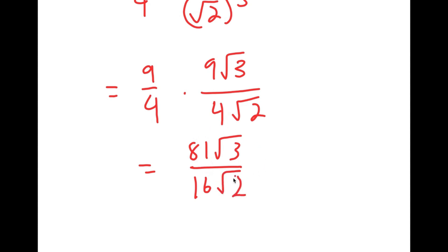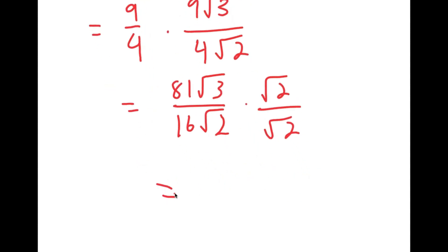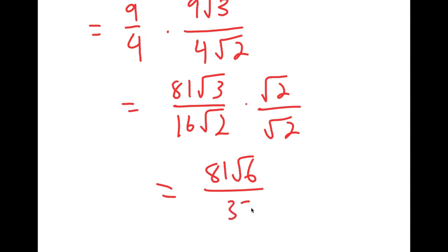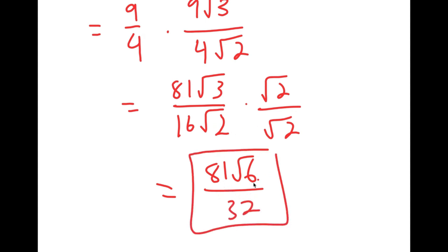We don't want any radicals in the denominator, so I'm going to multiply by the square root of 2 over the square root of 2. So I get 81 root 6 over 16 times 2, which is 32. So 81√6 over 32 is my answer.